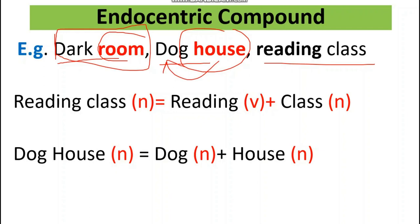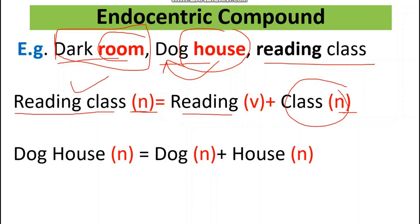Now let's look at 'reading class'. Reading class is a noun. 'Reading' is a verb and 'class' is a noun. The head word, which carries the basic meaning of the whole compound, is 'class'. We are talking about a class — a reading class. So this is an endocentric compound.